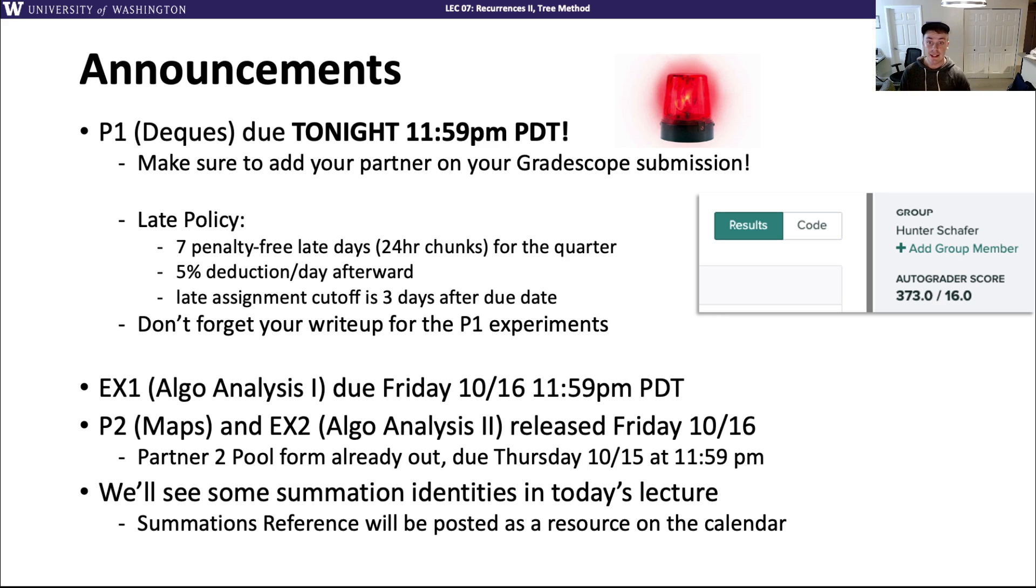Please don't forget there is a part of this project that is writing up your experiments. There is a separate submission on Gradescope for that. So there's two assignments you have to turn in for project part one. One is the project code, and the other is turning in your experiment report, which you should also add your partner to.